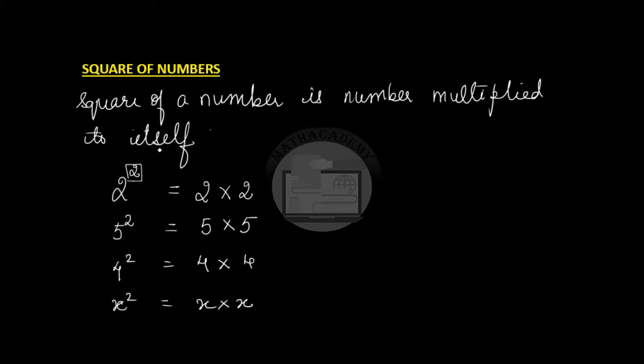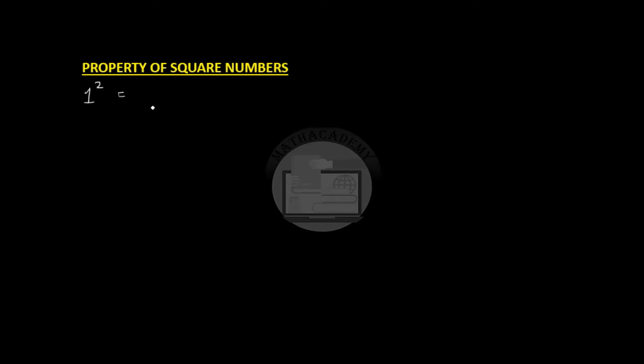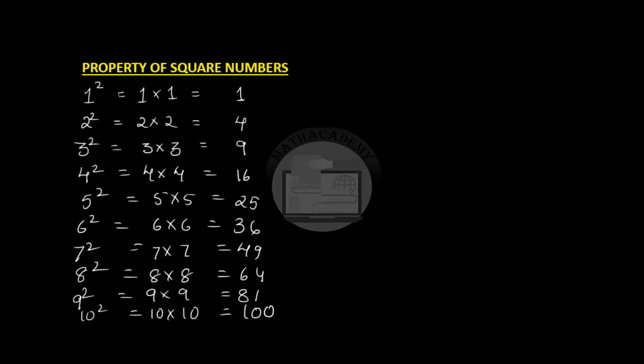I hope this much is clear to everyone. Now let us see some properties of square numbers. To look at the property, let us first write down the squares of the first 10 natural numbers and observe what we see.